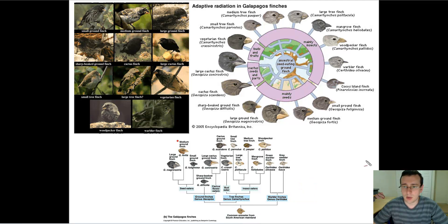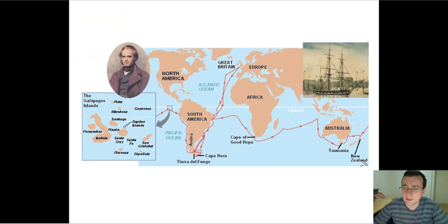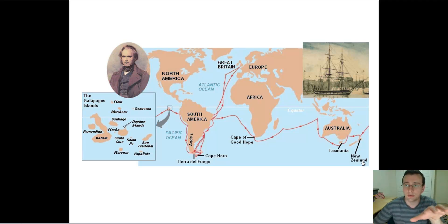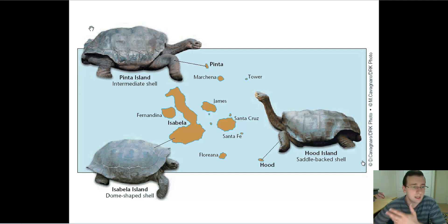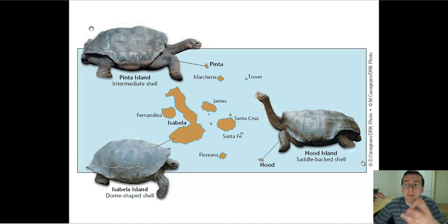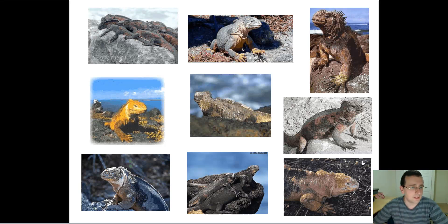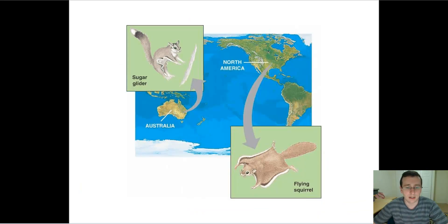As he took this trip around the world, he noticed an uneven distribution of species in terms of space and time. He noticed some species that used to exist no longer existed, which he saw in the fossil record. Species also varied across space — for example, tortoises on different Galapagos islands had different features in different areas. He also observed things like a sugar glider in Australia and a flying squirrel in North America having similar features because they share similar environments.